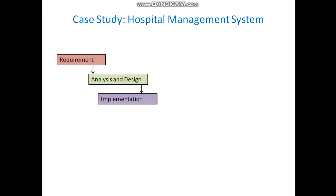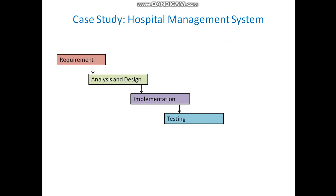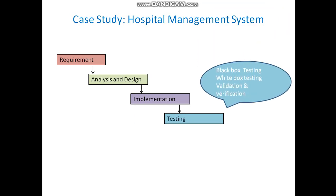Next is the implementation phase, where software modules for each feature are developed. Whatever the design team has specified, all features must be implemented by the developers. After that, the testing phase comes: the product is ready module-wise, then black box testing, white box testing, validation and verification, integration testing, and performance testing are all performed. In this way, all testing is done and the complete product is ready.